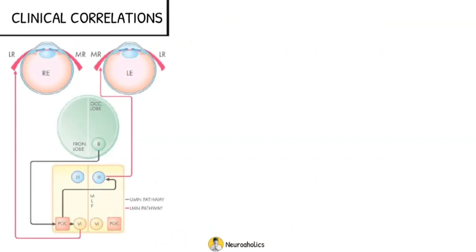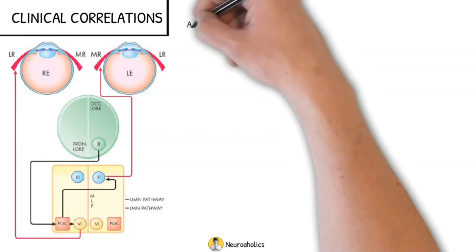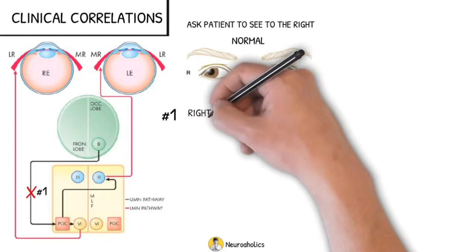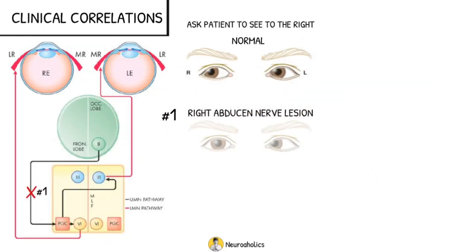Let's now focus on the clinical correlations. If you ask someone to look to the right, this is the normal response. If there is a lesion on the right abducens nerve, this is what the eyes look like. The right eye cannot look to the right, cannot abduct.